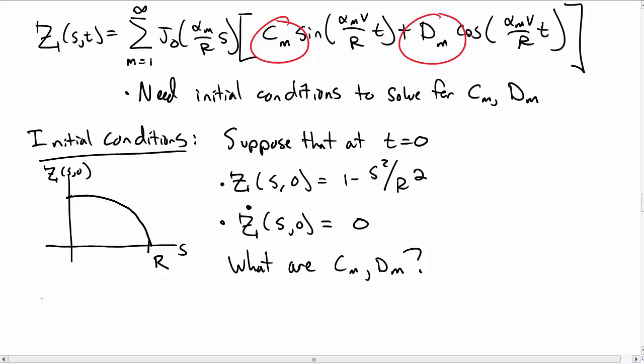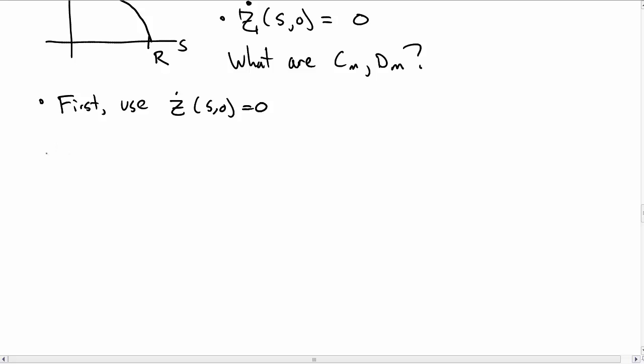So first let's just use the first initial condition, the z dot initial condition at s and t equal to 0 being 0. So put 0 is, must be equal to the sum, so the j 0, nothing really happens to that because it's still a function of s. And then we take a time derivative, which brings out a factor of alpha v over r. Then c sub m, the sine becomes a cosine.